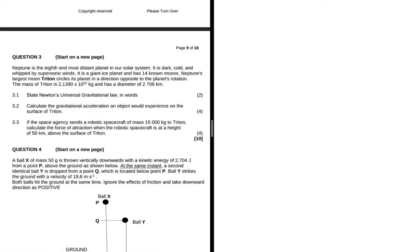Neptune's largest moon Triton circles this planet in a direction opposite to the planet's rotation. The mass of Triton is 2.139 times 10 to the 22 kilograms and it has a diameter of 2706 kilometers.